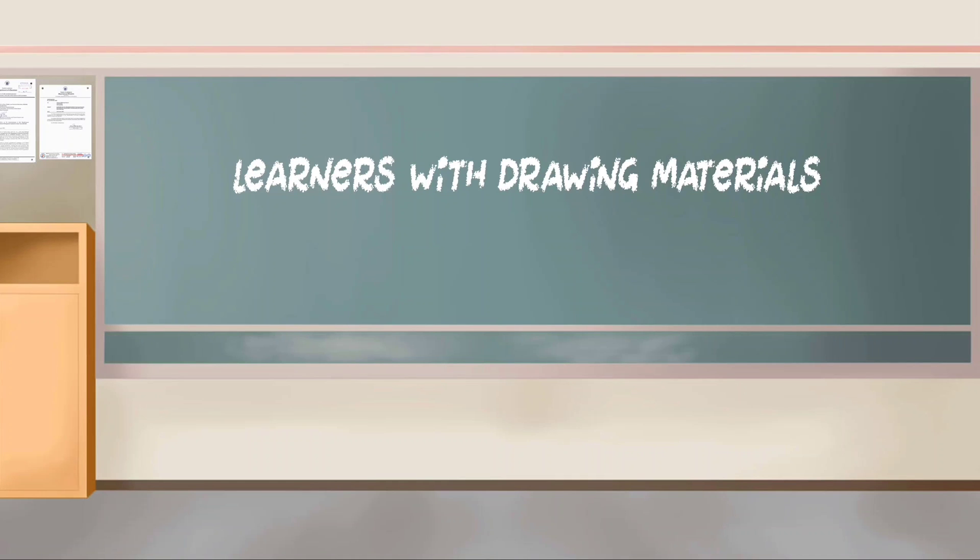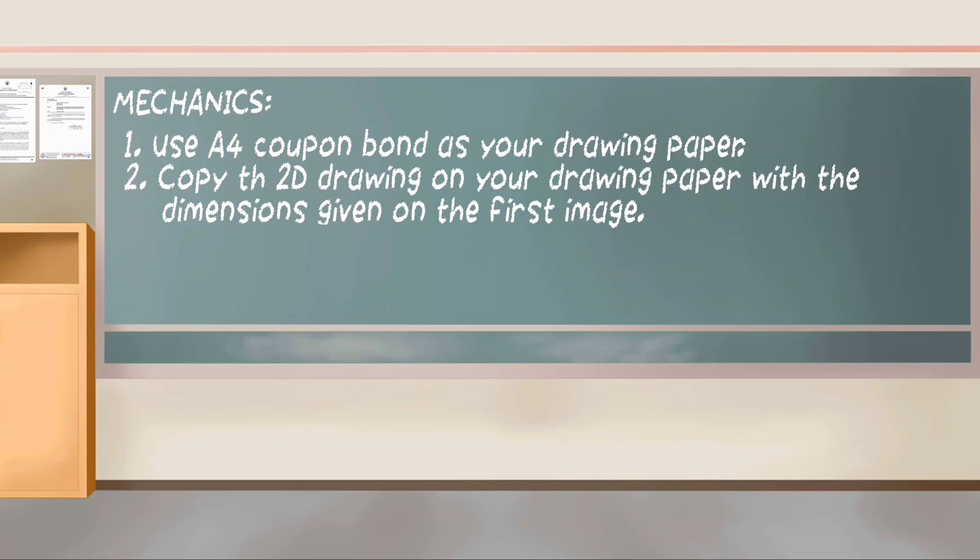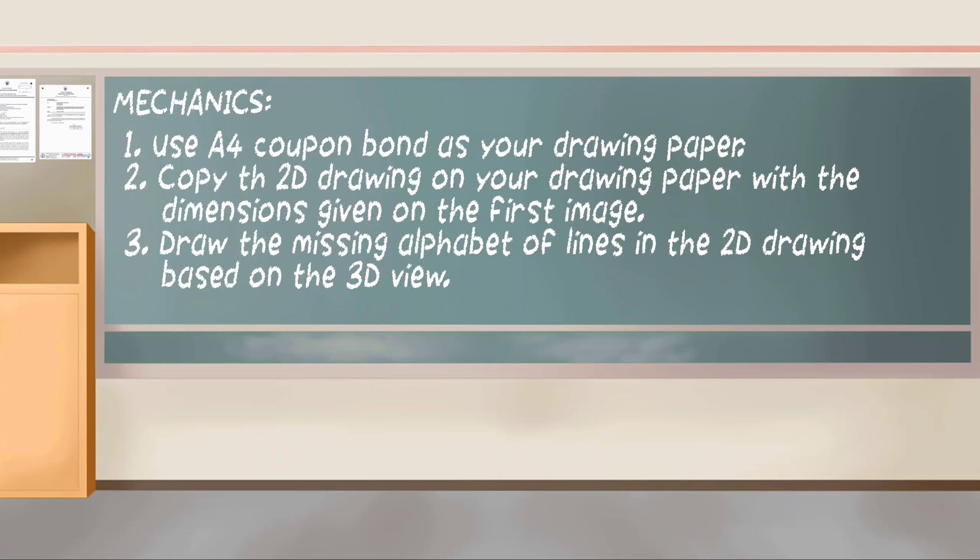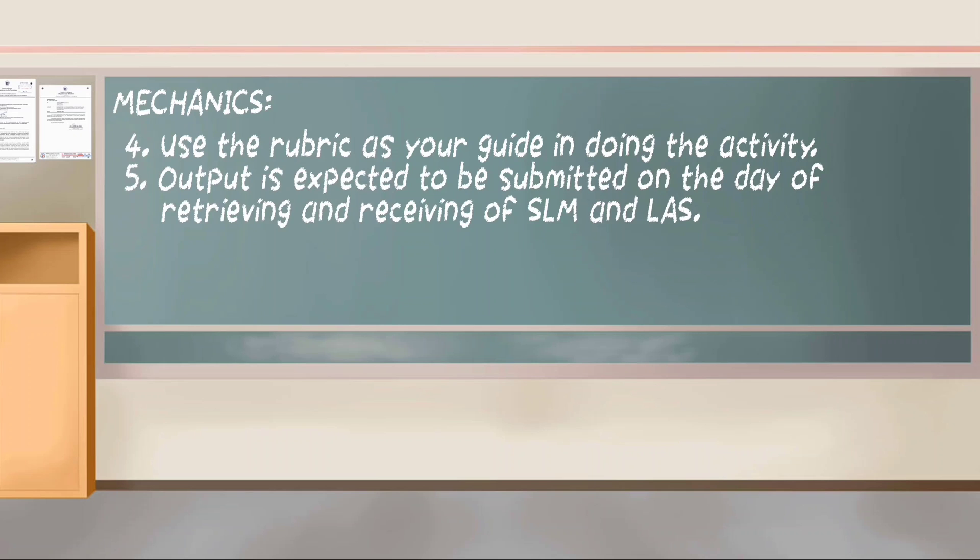The next activity is for the learners with drawing materials only. Mechanics: 1. Use A4 or Cop and Band as your drawing paper. 2. Copy the 2D drawing on your drawing paper with the dimensions given on the first image. 3. Draw the missing alphabet of lines in the 2D drawing based on the 3D view. 4. Use the rubric as your guide in doing the activity.